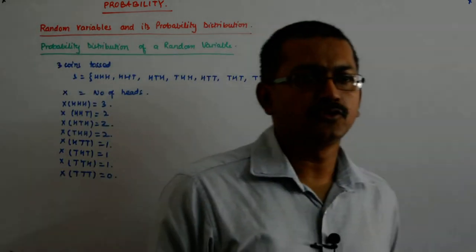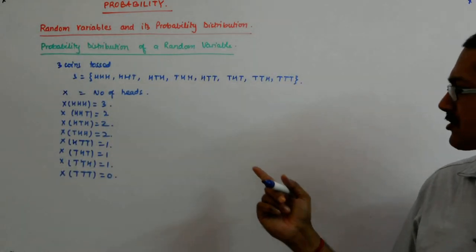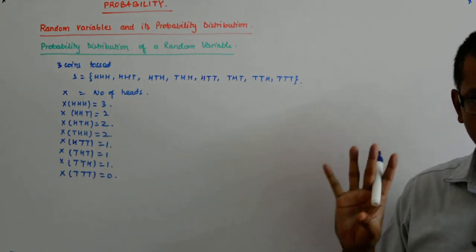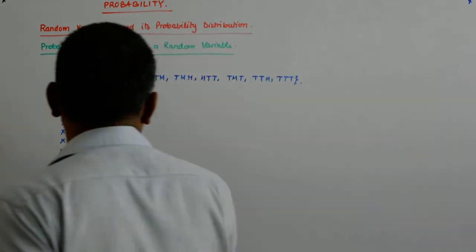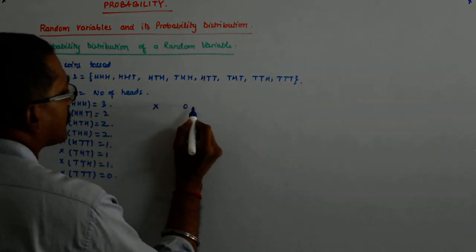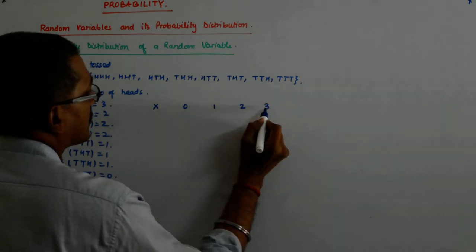Now, what are the values that it has taken? It has taken four distinct values, right? 0, 1, 2, 3. So, I may write this is the value of x: 0, 1, 2, 3.